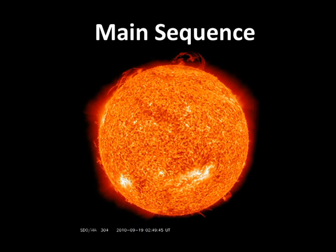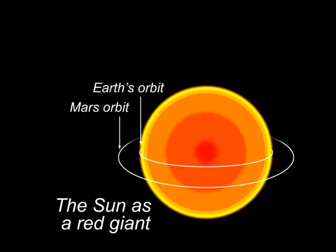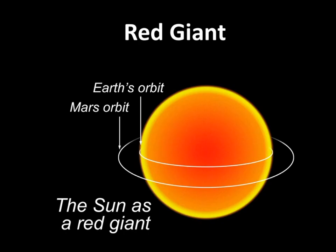Eventually the fuel for nuclear fusion gets used up, and these forces become unbalanced. When that happens, the star becomes a red giant. We've already talked a little bit about that — when the red giant stage happens, the sun starts to expand out and will actually engulf the Earth, as we see here in this picture.